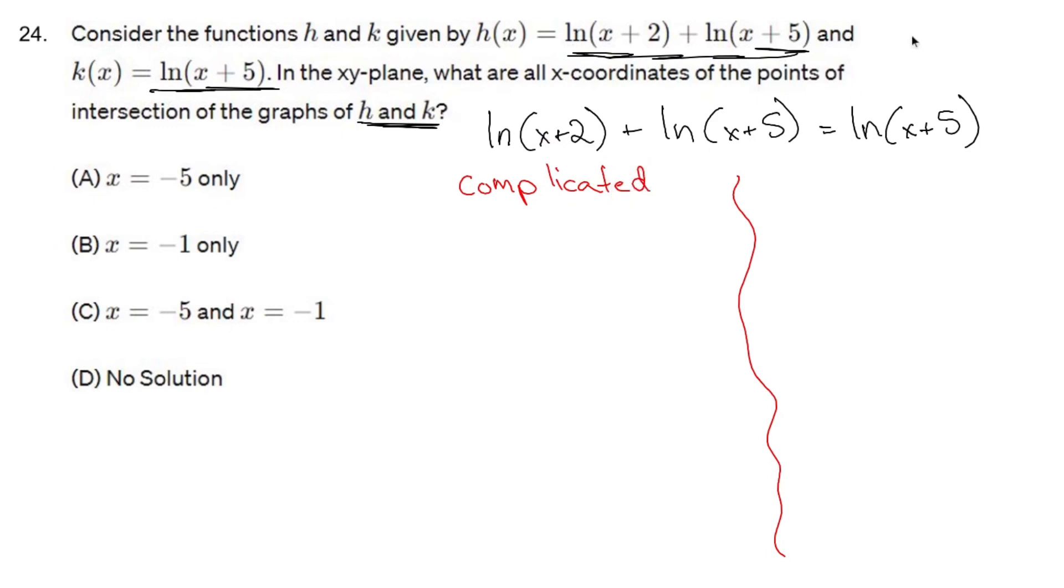Keep in mind ln is the same thing as log base e, so it follows all the log rules. You can combine these two since this is adding by multiplying the inside. So what we have is ln of x plus 2 times x plus 5 equals ln of x plus 5.